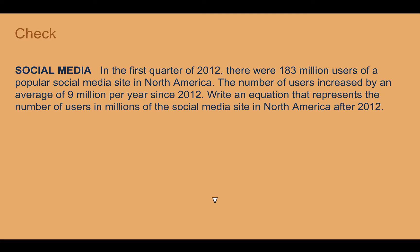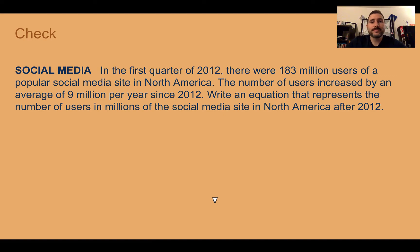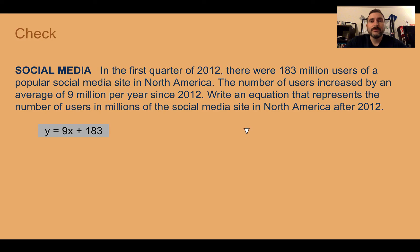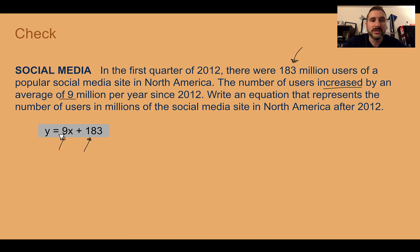Check your understanding: Read through the situation and write an equation in slope-intercept form. Pause the video now and complete the check. The answer is y equals 9x plus 183, where those numbers are in millions. It starts at 183 in the first quarter of 2012, so that's our b — the y-intercept is where you start. It's increasing by 9, which is m.